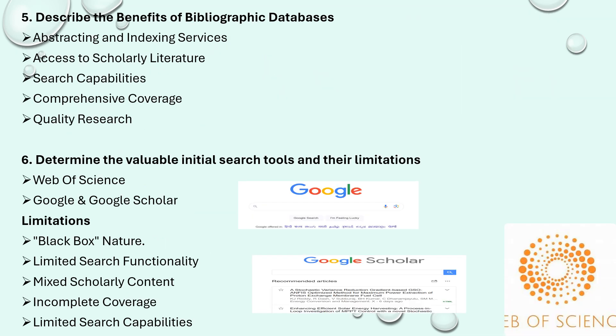Fifth question: describe the benefits of bibliographic databases. A bibliographic database provides abstracting and indexing services, available in the scholarly architecture showing the bibliography of each author. It also tells about the capabilities — how many papers, reviews, and topics have been covered — the coverage of each topic and problem statement, and the quality of research available in a particular bibliographic database.